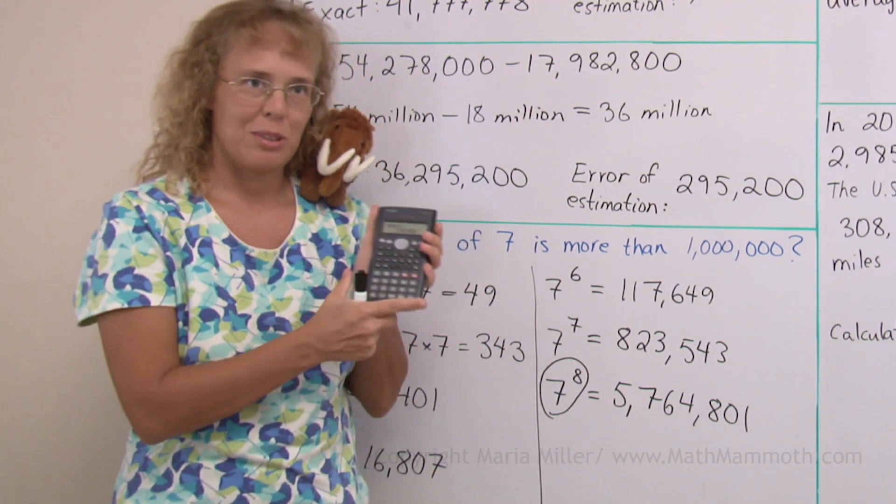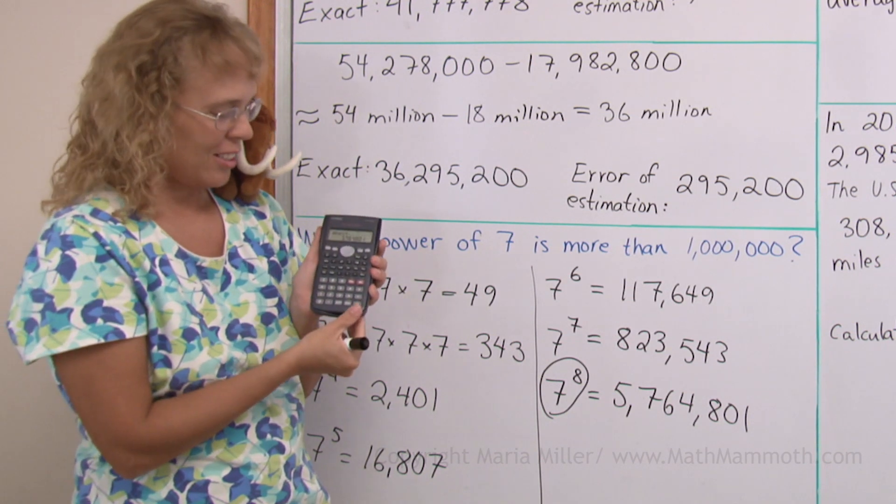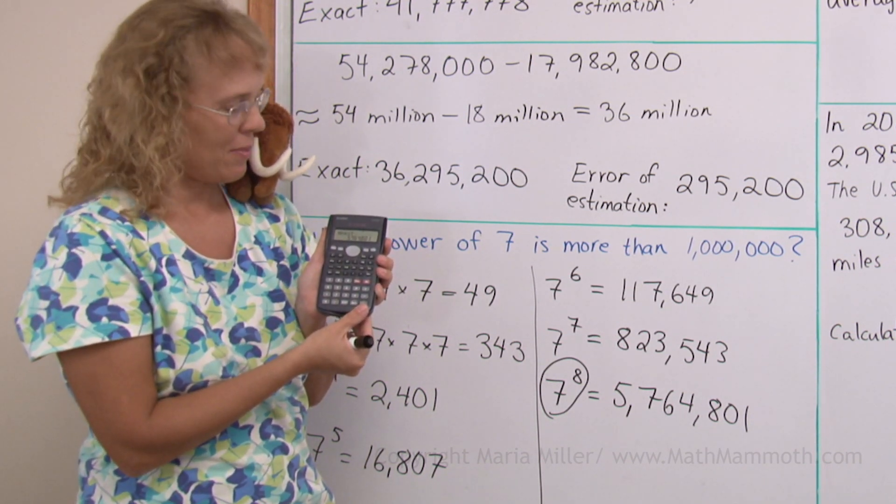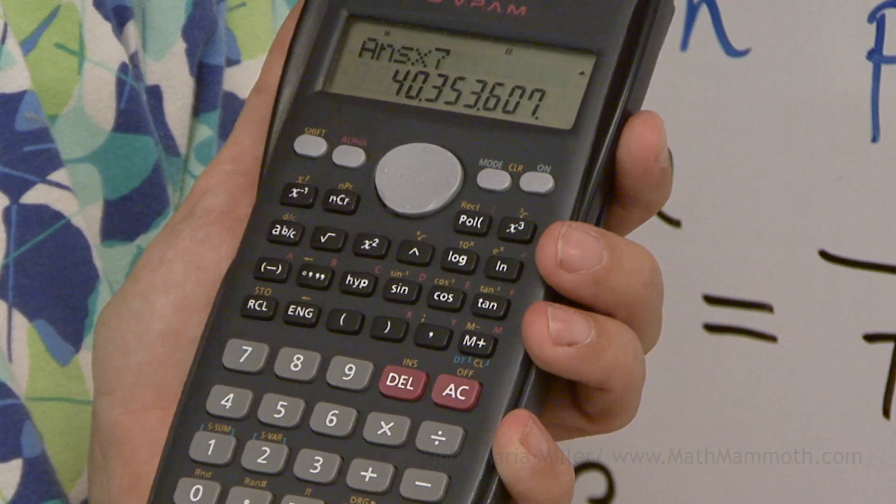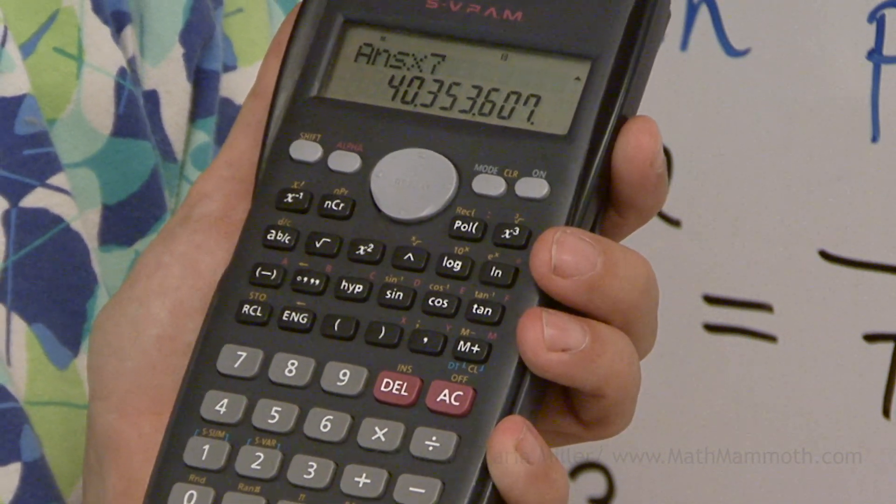But let me also show what happens if we continue over here, just pressing equals times seven times seven. Here we get 40,000,000 something. This is seven to the ninth power.